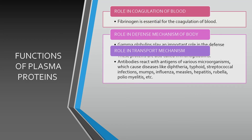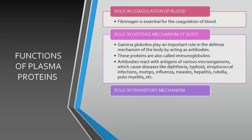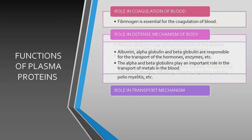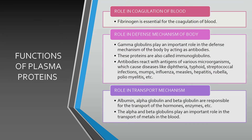Regarding the role in transport mechanism, albumin, alpha globulin, and beta globulin are responsible for the transport of hormones and enzymes. The alpha and beta globulins play an important role in the transport of metals in the blood.